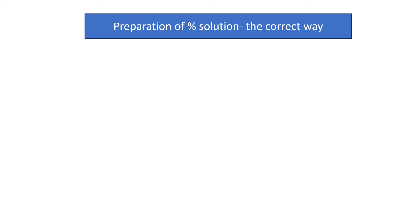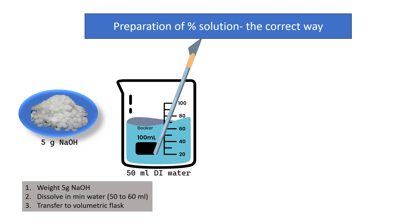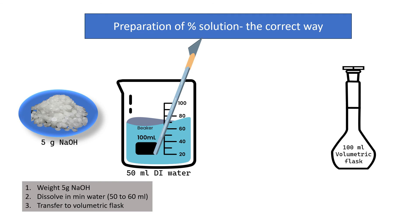Let us see the correct way of preparation. First we weigh 5 grams of NaOH and transfer it to a glass beaker containing 50–60 ml of water, and dissolve the NaOH completely in it with the help of a glass rod. At this stage the solution is hot, so allow it to cool to room temperature. Then transfer this solution to a 100 ml volumetric flask.